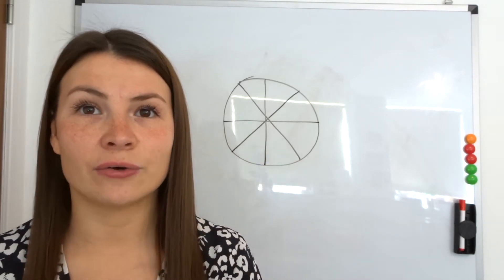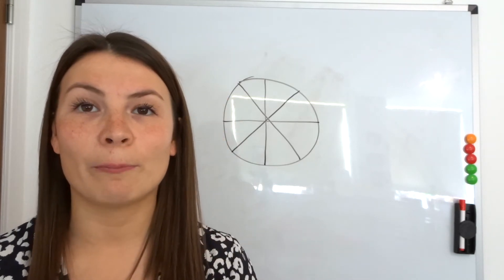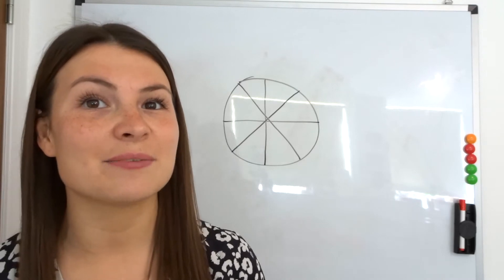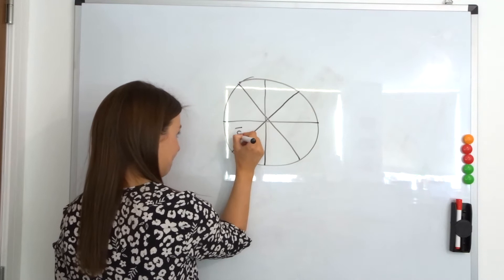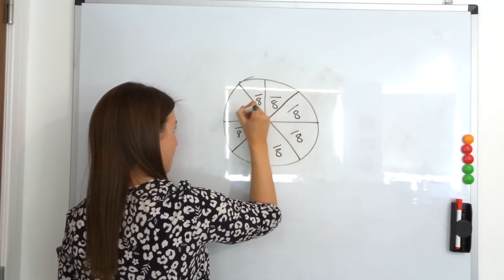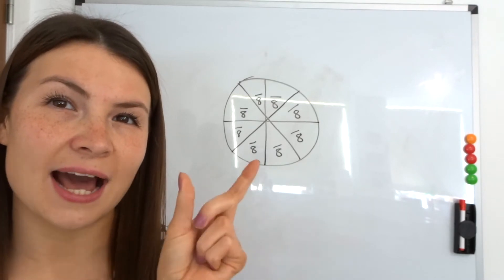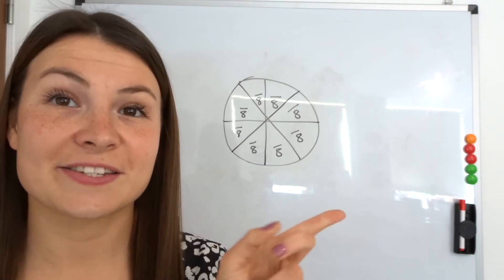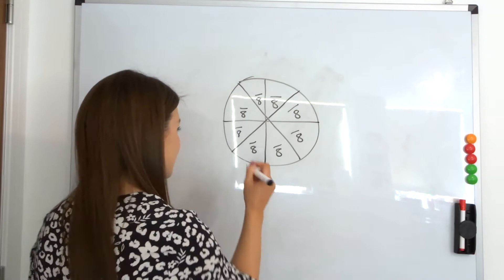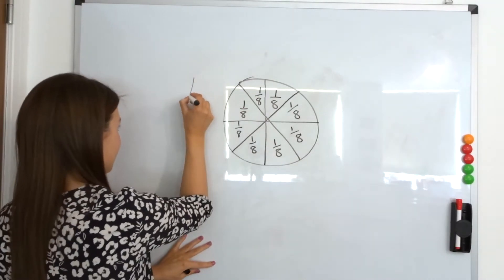So I've now split the circle up into eight equal parts. What is the value of each section of this circle? What should the denominator be - the number on the bottom? How many equal parts are there? Eight - good. So the number on the bottom needs to be eight. And then what does the number on the top need to be? Each slice is how many parts? Good - one, because each slice only represents one part.